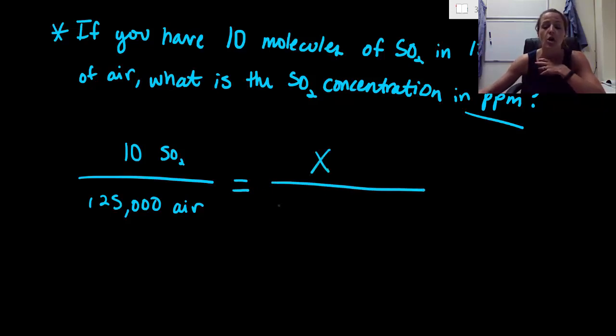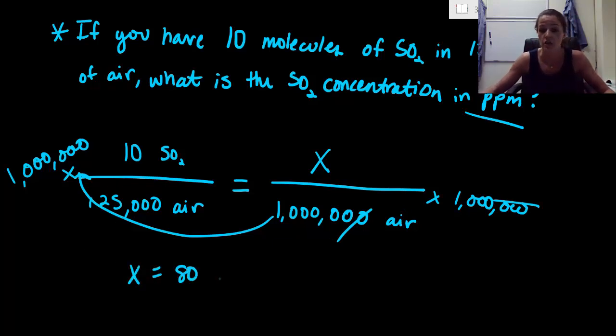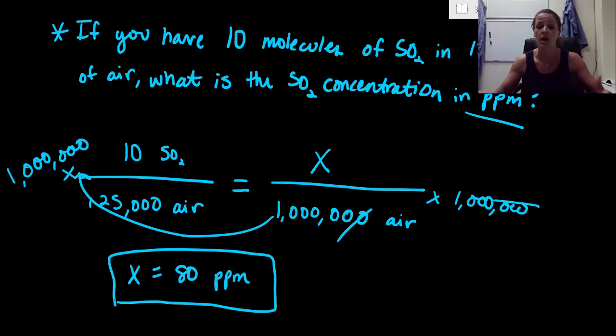We're solving for this number up here per every million, so 1 million pieces of air. So we're just trying to get a relative fraction. All we have to do is cross multiply. So I'm going to multiply this times this side, times 1 million. This side is going to cancel out, and we will be left with x equals 80, and then the unit that we're looking for is ppm. So hopefully you came up with the answer of 80 ppm. We would just say that we have an SO2 concentration of 80 parts per million.